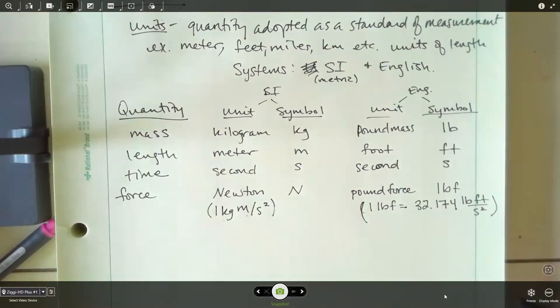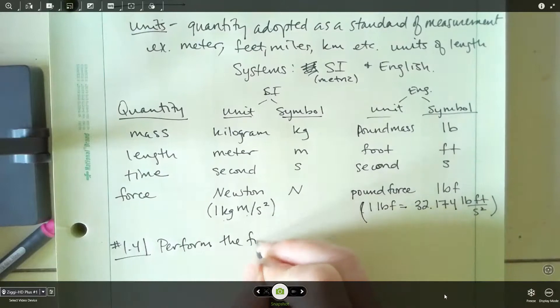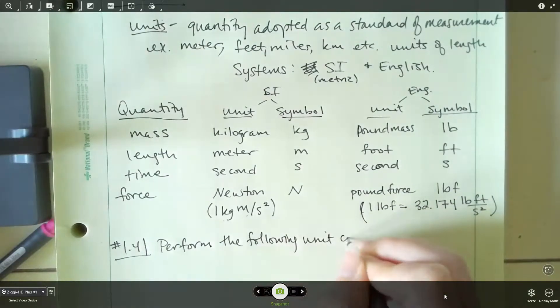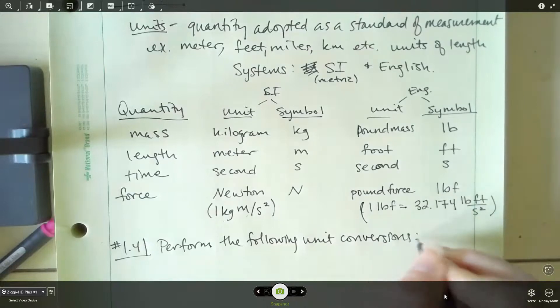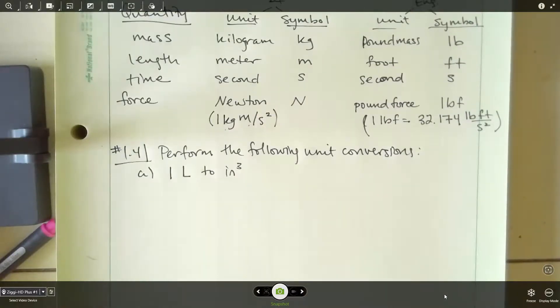Okay, so those are the basics for units. Let's do a couple of unit conversion examples just to make sure we all are on the same page. We'll remember how to do it. So let's do number 1.4 out of your book. And the problem tells us to perform the following unit conversions. So we're going to do part A. And for this one, we're going to convert one liter to cubic inches. Now let's think about what that is. So a liter is a volume, right? And that makes sense because inches cubed is a volume.